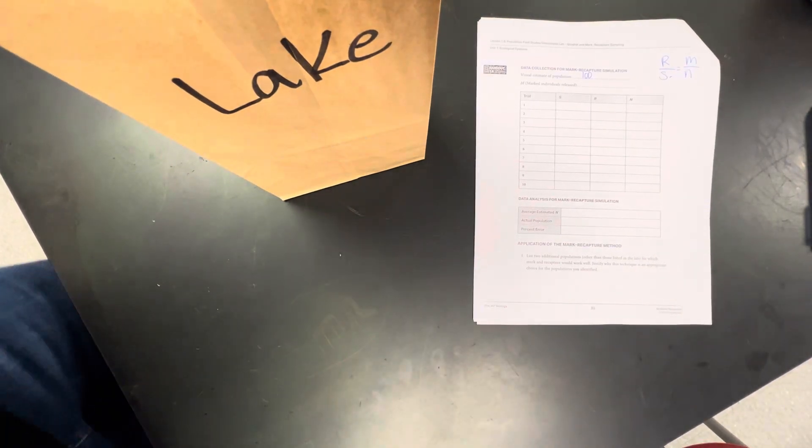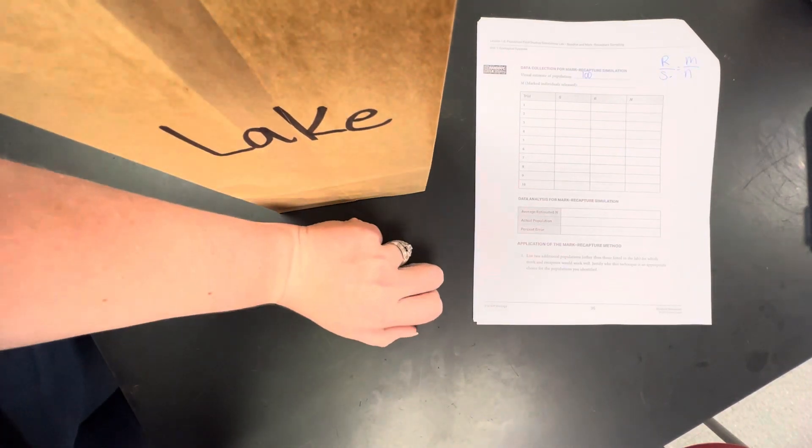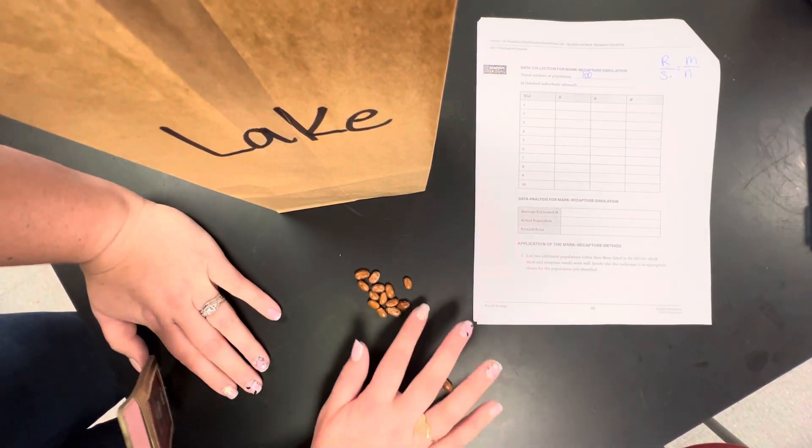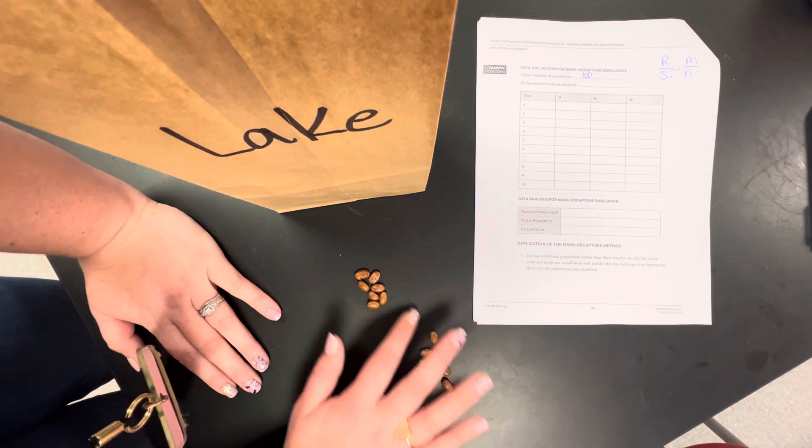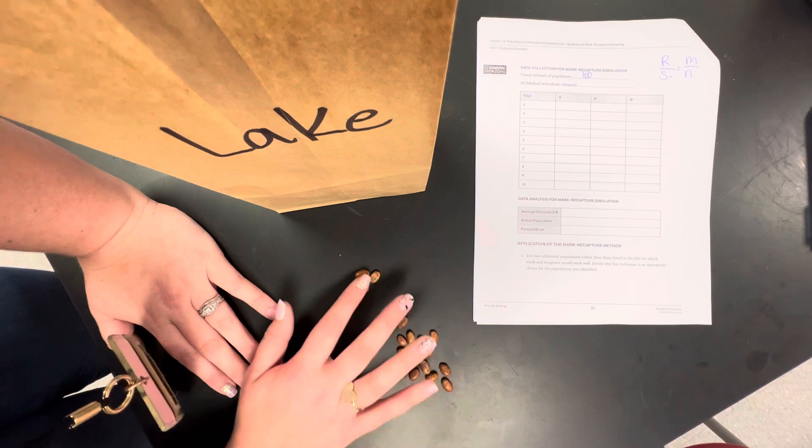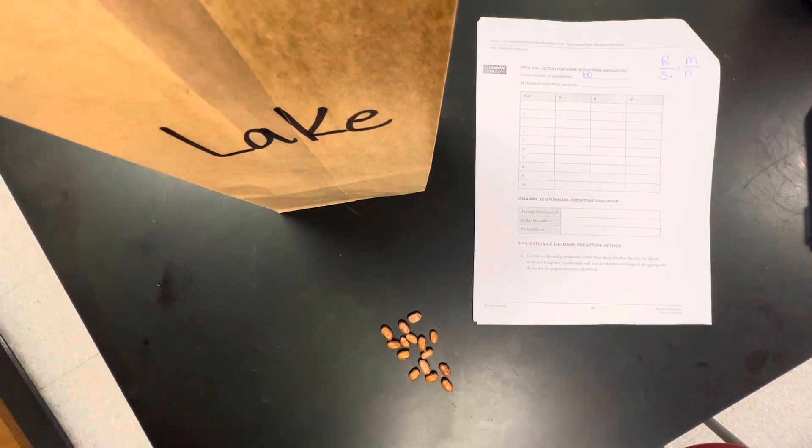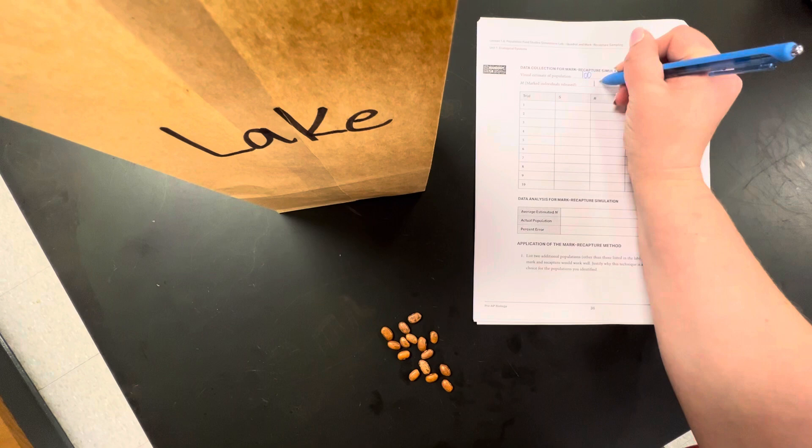So the first thing I have to do is I will go out into the wild and I will catch my first sampling of beans. So I am going to put them right here. I am going to count them. So 1, 2, 3, 4, 5, 6, 7, 8, 9, 10, 11, 12, 13, 14, 15. So that is going to be M, 15.